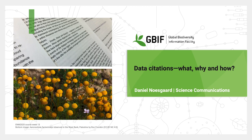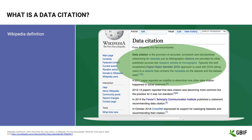Okay, so to kick things off, let's start by looking at what a data citation is. If you take a look at the Wikipedia definition, it says a data citation is the provision of accurate, consistent, and standardized referencing for datasets — just as bibliographic citations are provided for other published sources like research articles or monographs. Typically the well-established DOI approach is used, with DOIs taking users to a website that contains the metadata on the dataset and the dataset itself.